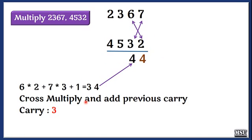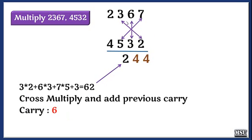And then the third step, I am going to perform 3 cross multiplications. Here you see 3 into 2, 5 into 7, and 6 into 3 plus the carry, the result is 62. 2 is written here, 6 is a carry.